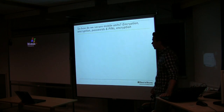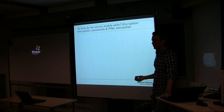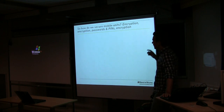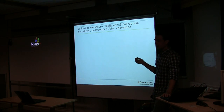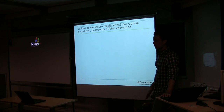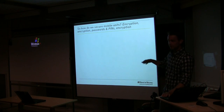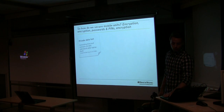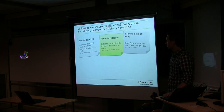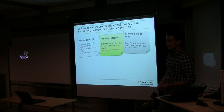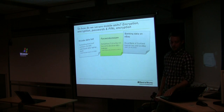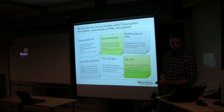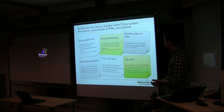Basically what people do to secure mobile units is two things: they encrypt everything, and they use password/PIN locking mechanisms to lock up the mobile device when it's not in use. There has been a lot of leaked data from mobile units — for example, hard drives from laptops from English banks sold on eBay. Encryption has become more prevalent in the mobile device, at least in the enterprise market.